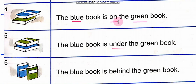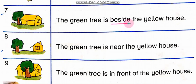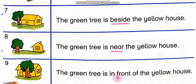U-N-D-E-R: Under. Under mean neeche. O-N: On. On mean par. B-E-H-I-N-D: Behind. Behind mean peeche. B-E-S-I-D-E: Beside. Beside mean saath. N-E-A-R: Near. Near mean karib. I-N F-R-O-N-T: In front of — saamne. H-O-U-S-E: House. House mean ghar. Ameen.